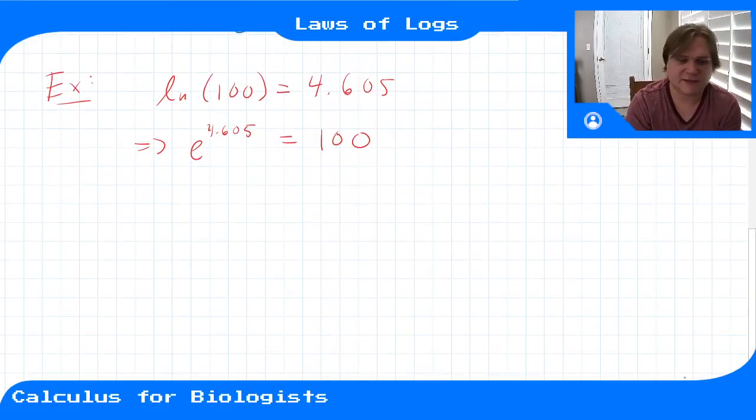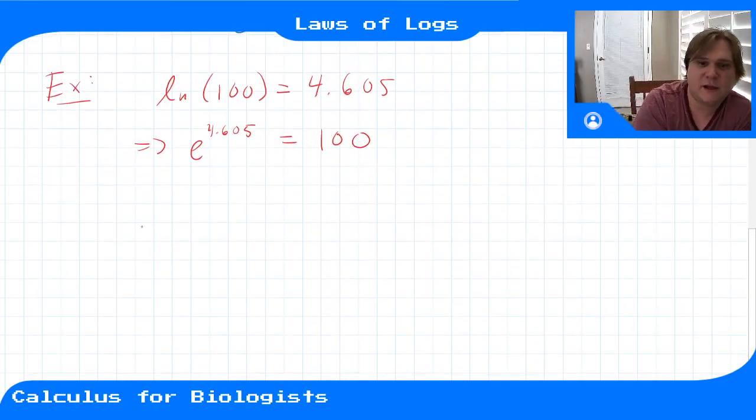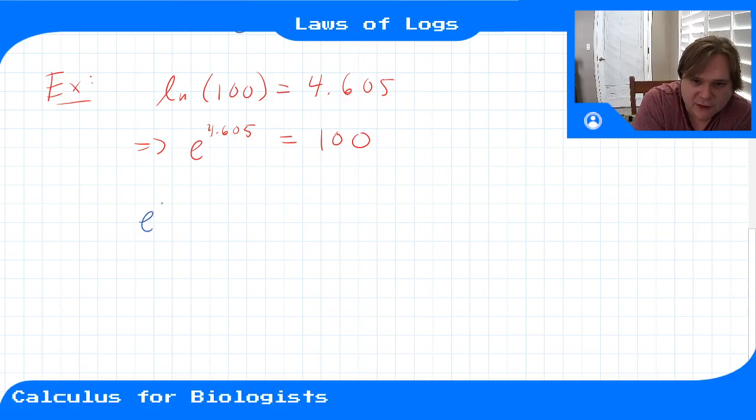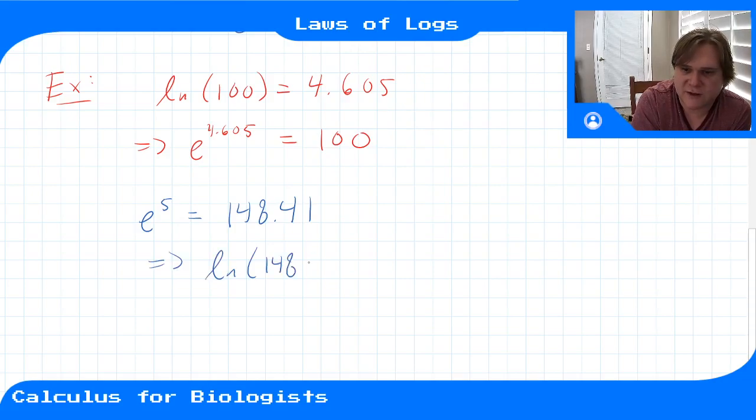Okay, let's do another one. Let's say we're going from exponentials to logarithms. So if I look at e^5, if I plug that into a calculator, I'll get 148.41. So what this means is that the natural log of 148.41 is equal to 5.